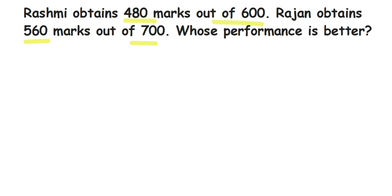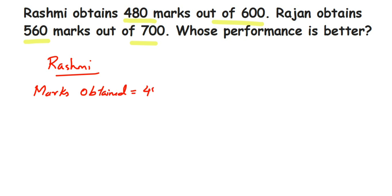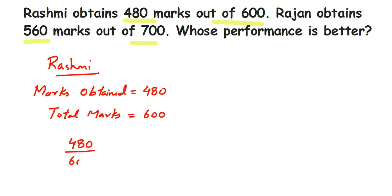In case of Rashmi, she got 480 marks out of 600. So marks obtained is 480 and total marks is 600. We have to find out the percentage.